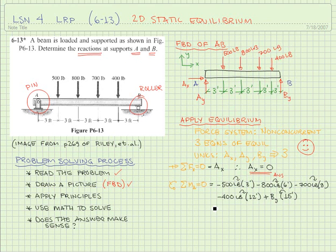Solving this equation algebraically, we'll find that B_y is a positive 1160 pounds. Since it is positive, it means it is drawn correctly in this free body diagram, and so a complete answer will include that direction up.